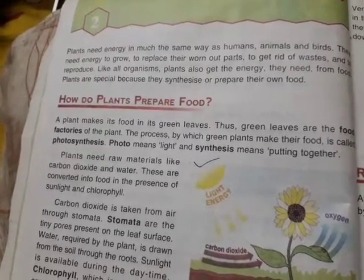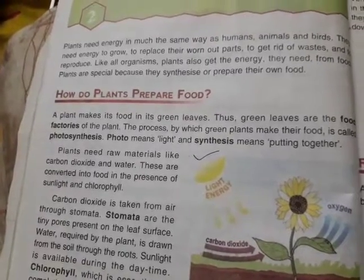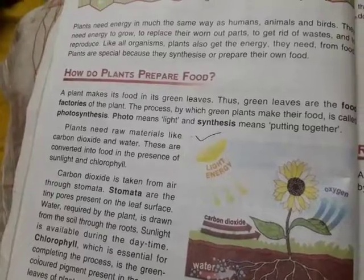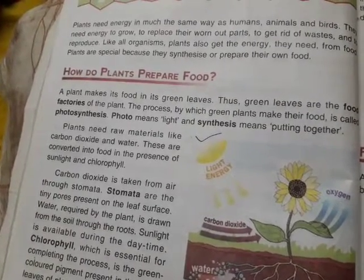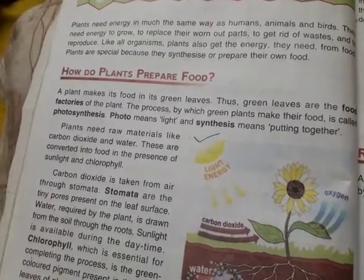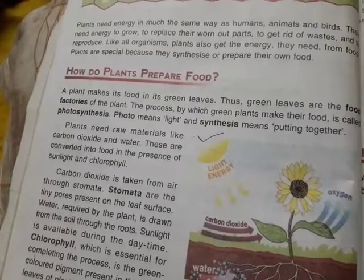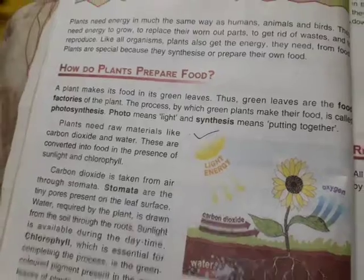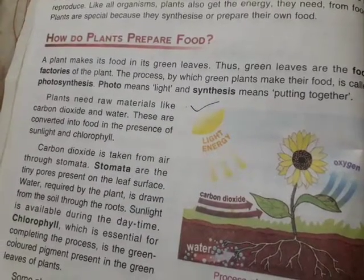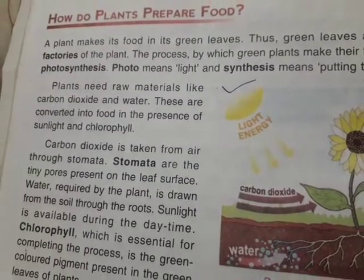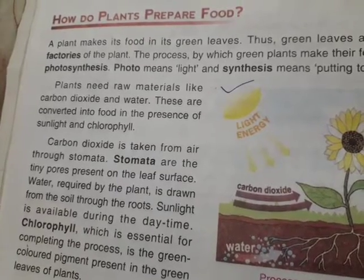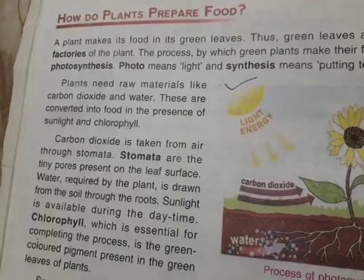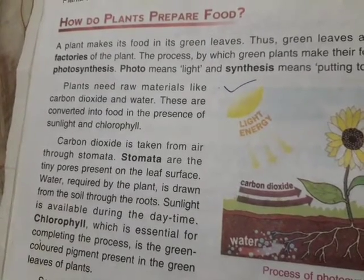The process by which green plants make food is called photosynthesis. Photo means light. Synthesis means putting together. So to make food, plants' green leaves require energy from the sun, that is solar energy. In the presence of solar energy, their green leaves have chlorophyll — a green chemical which absorbs carbon dioxide from the air and water and minerals from the ground to make food. Plants need raw material like carbon dioxide and water.